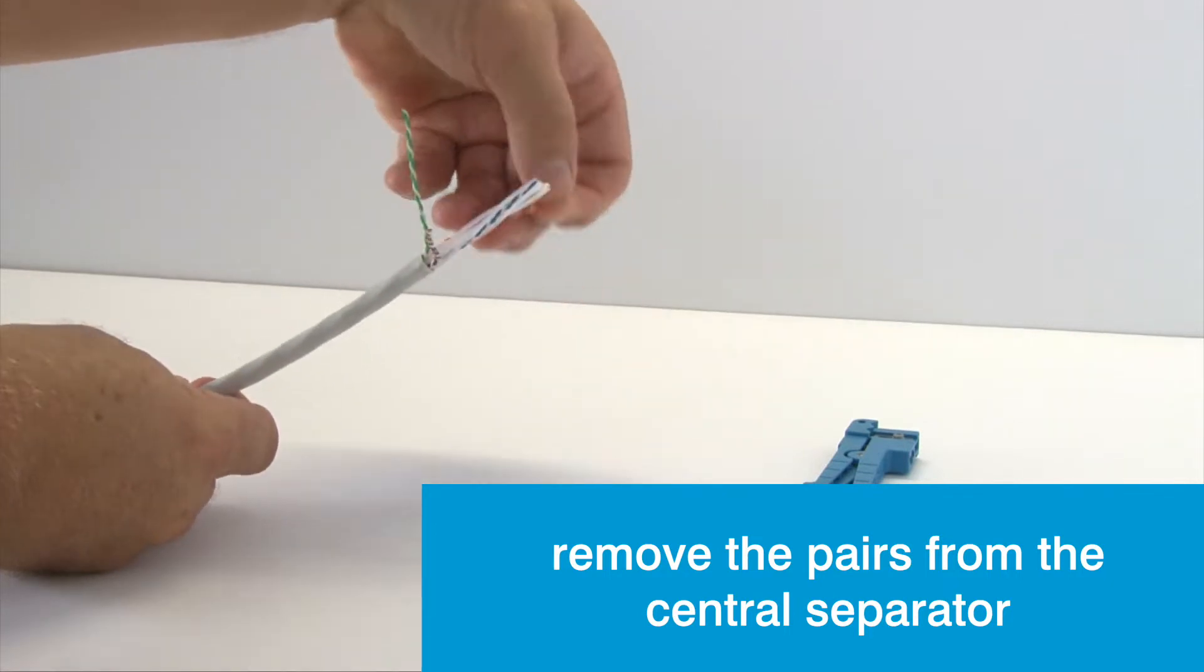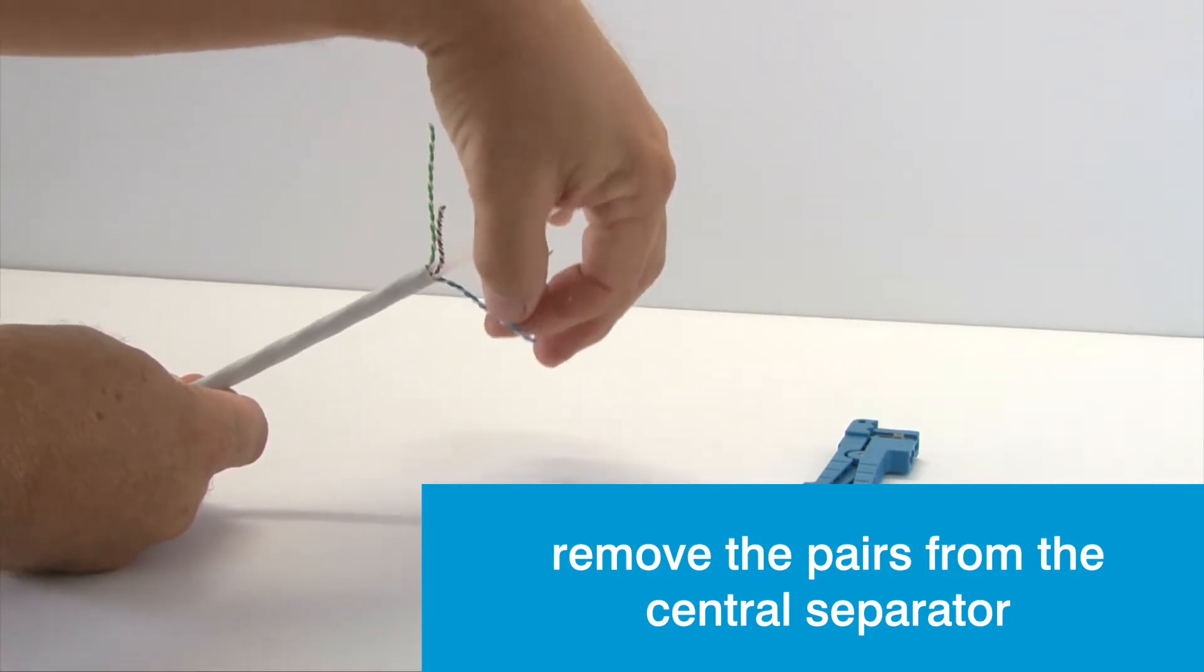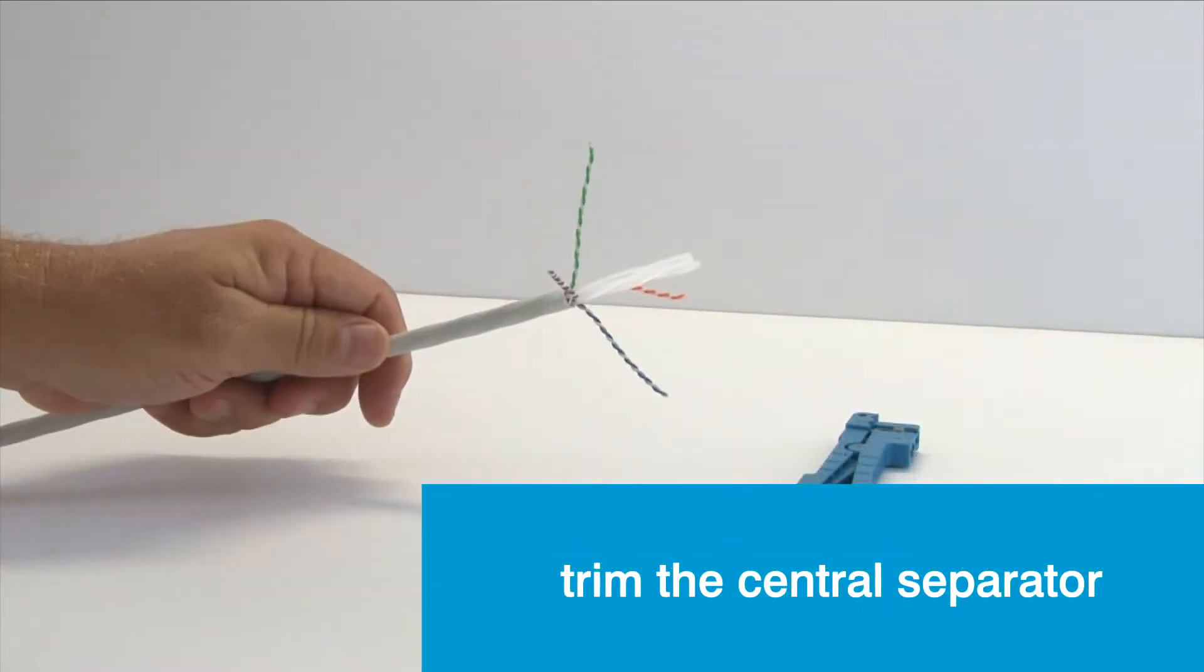Bend the pairs away from the central separator, and then with a pair of side cutters, trim the separator back.